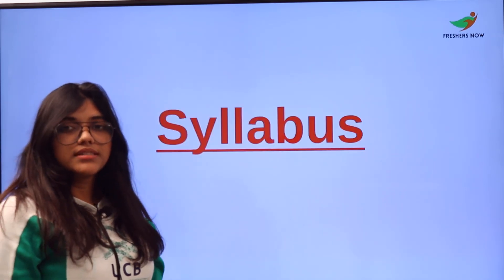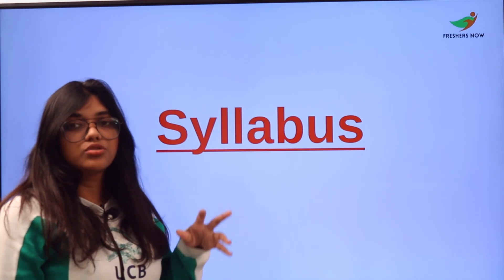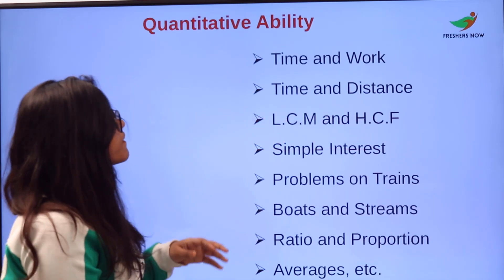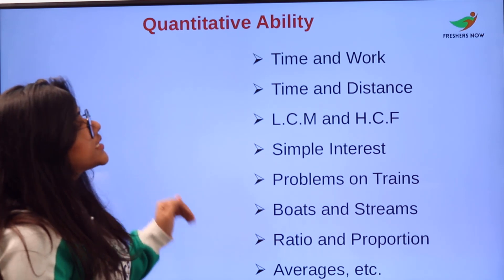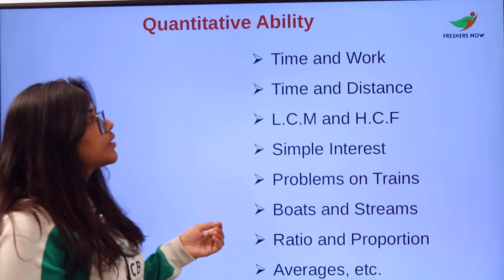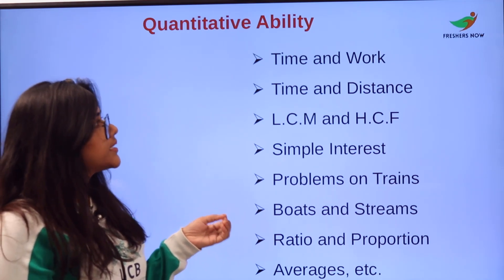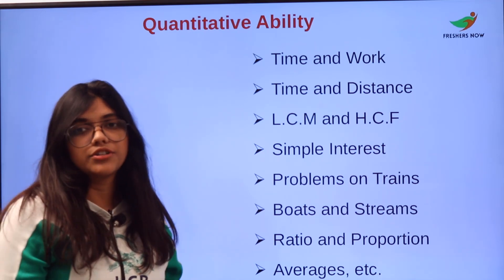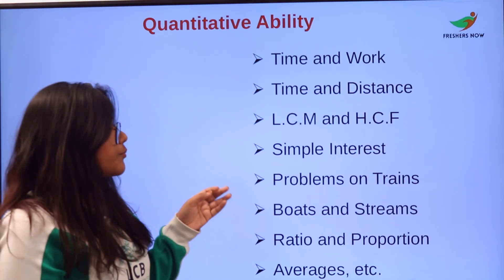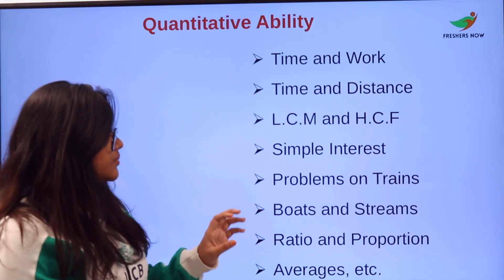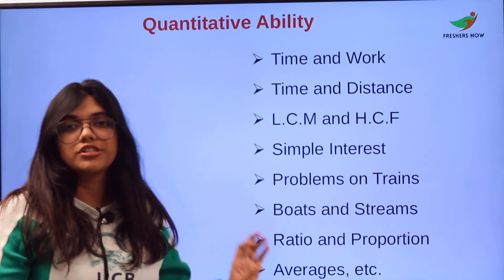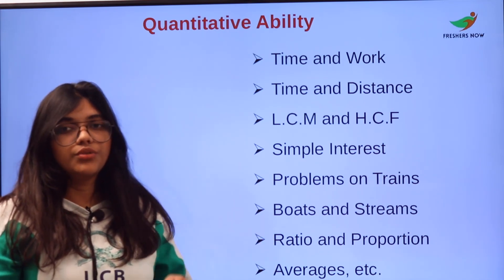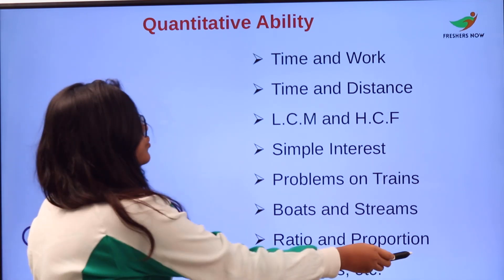Now we will see the syllabus and what topics you need to cover in your preparation. For Quantitative Ability, you have to cover topics like time and work, time and distance, LCM and HCF, simple interest, problems on trains, boats and streams, ratio and proportions, averages, logarithms, and more. All of these topics you need to be well prepared in.